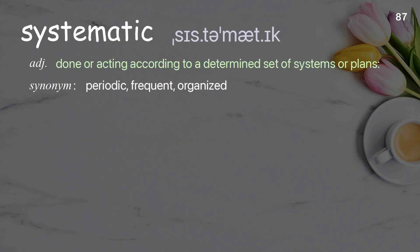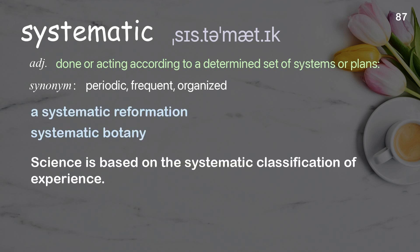Systematic. Done or acting according to a determined set of systems or plans. Examples: a systematic reformation, systematic botany. Science is based on the systematic classification of experience.